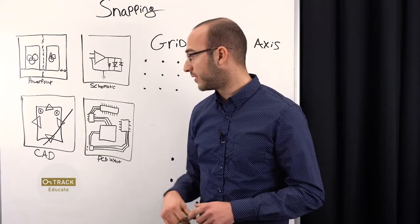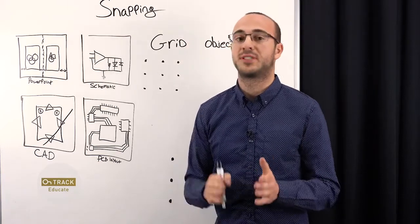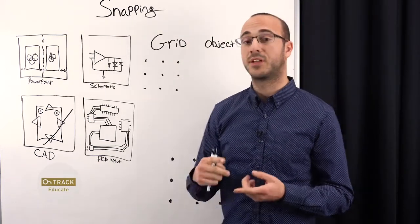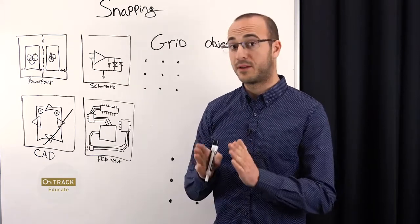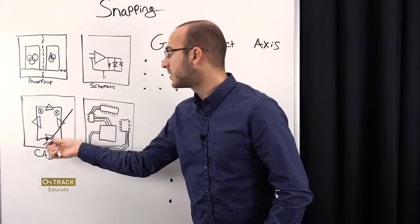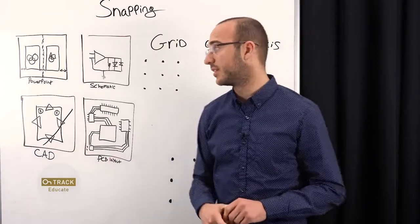When looking at a CAD package, you want things to be very precise, and snapping can allow you to do that. You can have things perfectly perpendicular, parallel, or if you want to have a line bisect a shape of another object, you can do that very easily.